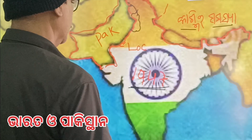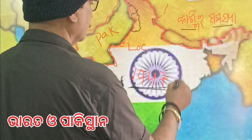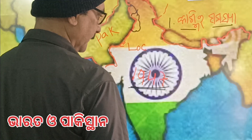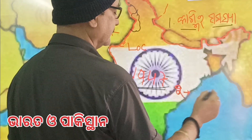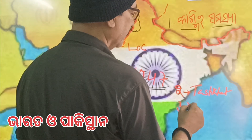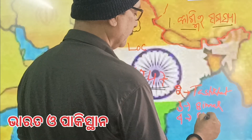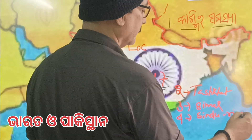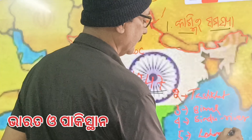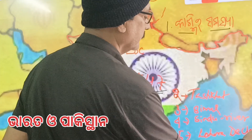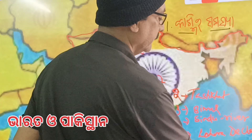Next issue — point number 2. Point number 3. Point number 4: Sindhu Nodhi Jalo Bantana — the Sindhu River Water Dispute. Point number 5. The Kargil conflict — this is 1999.